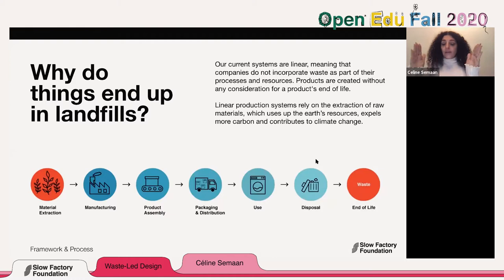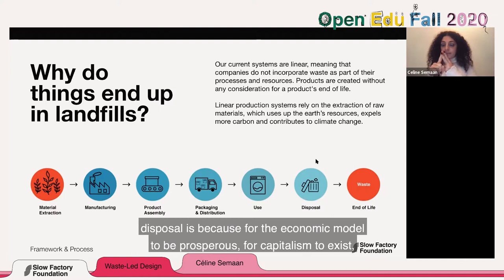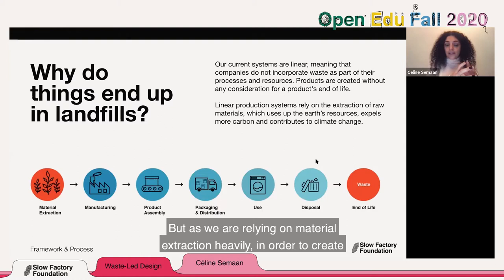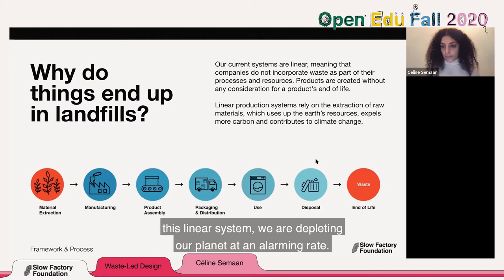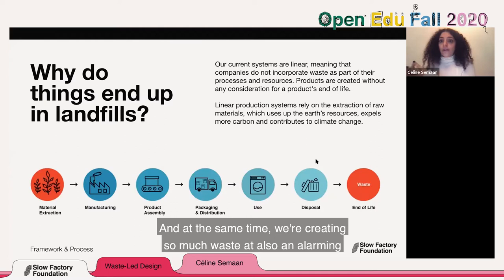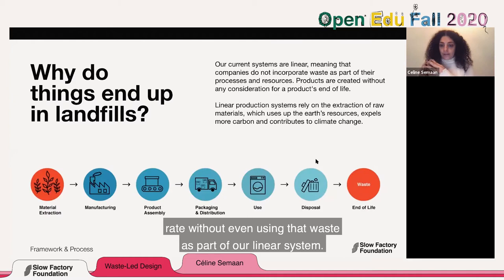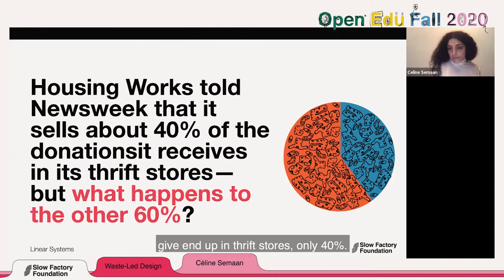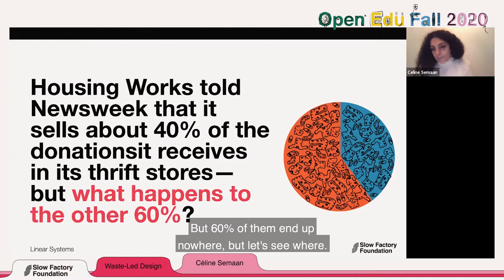As we rely heavily on material extraction to create this linear system, we are depleting our planet at an alarming rate. At the same time, we're creating so much waste at an alarming rate without even using that waste as part of our linear system. According to Housing Works, only 40% of clothing donations end up in thrift stores. But 60% end up nowhere useful.